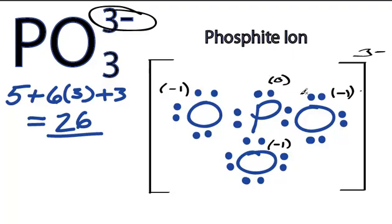That's the Lewis structure for PO3 3 minus. This is Dr. B, and thanks for watching.